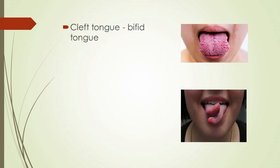Cleft tongue (bifid tongue or completely cleft tongue) is a rare condition caused by failure of the lateral lingual swellings to merge. More common is an incompletely cleft tongue appearing as a midline fissure, which is normally classified as fissure tongue.